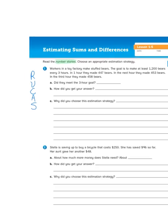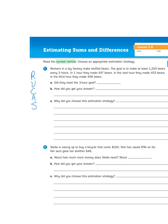So I'm going to re-read the text in the problem. It says, Workers in a toy factory make stuffed bears. The goal is to make at least 1,200 bears every three hours. In one hour, they made 447 bears. In the next hour, they made 453 bears. In the third hour, they made 458 bears. So I re-read the problem.